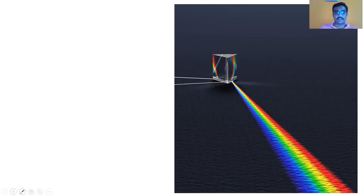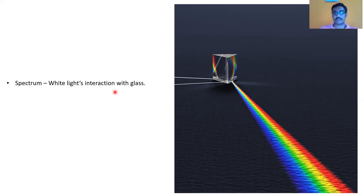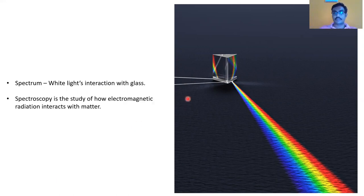What happens in a spectrum? When we speak about a spectrum, it talks of white light's interaction with glass — white light hitting glass, getting separated into its component wavelengths, giving you the spectrum. What if white light is going to get separated differently? We study this same kind of scenario, but just replace white light with any other electromagnetic radiation.